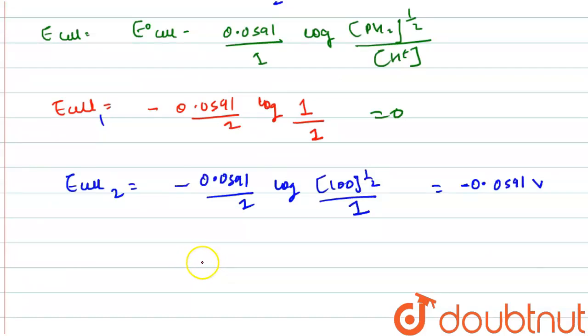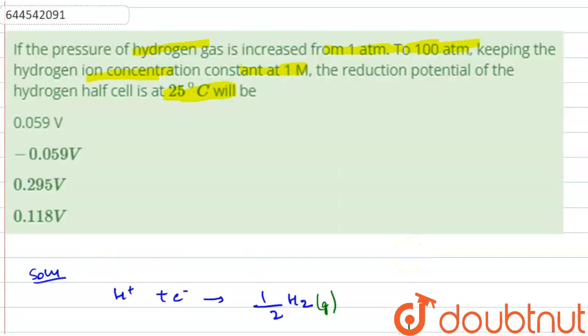The reduction potential at 100 atm is E of cell equals minus 0.0591 volt. E naught of cell is zero in this reaction, and log of 100 to the power one-half is one, since log of 10 is one and square root of 100 is 10. Therefore, E of cell equals minus 0.0591 volt. Option B is the correct option.